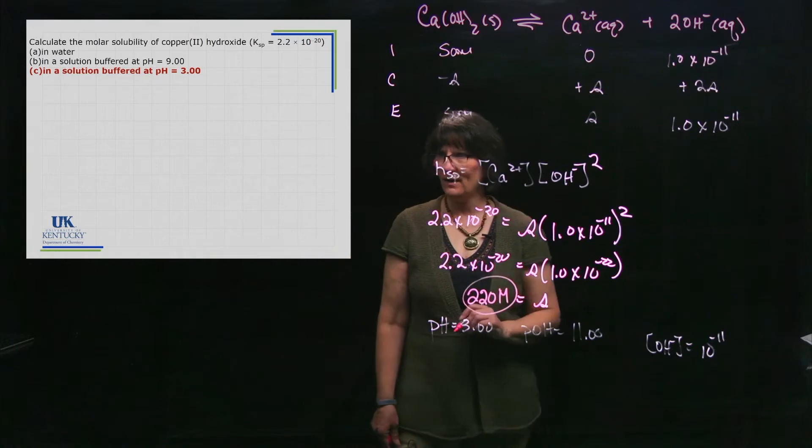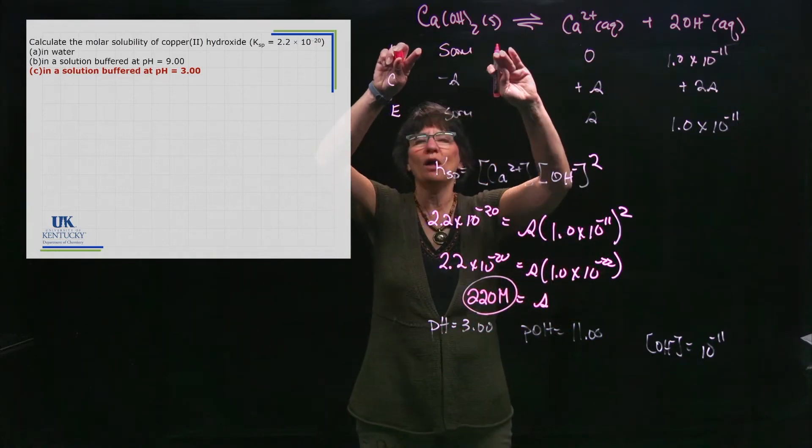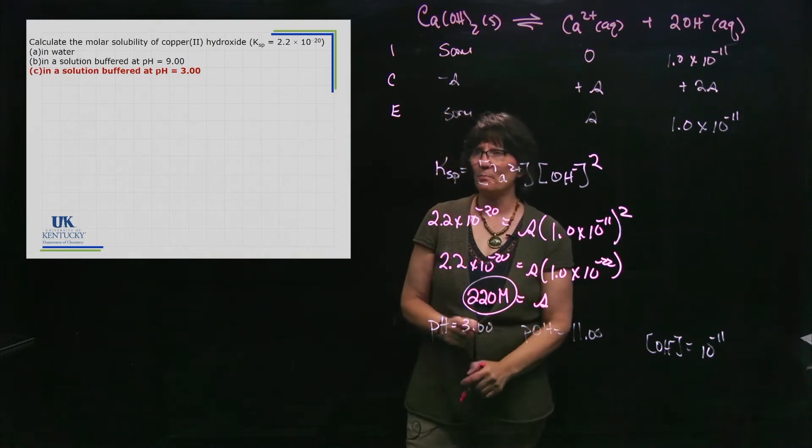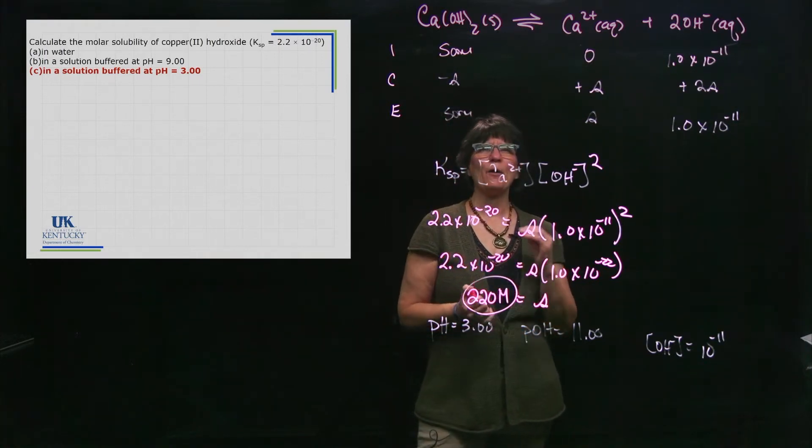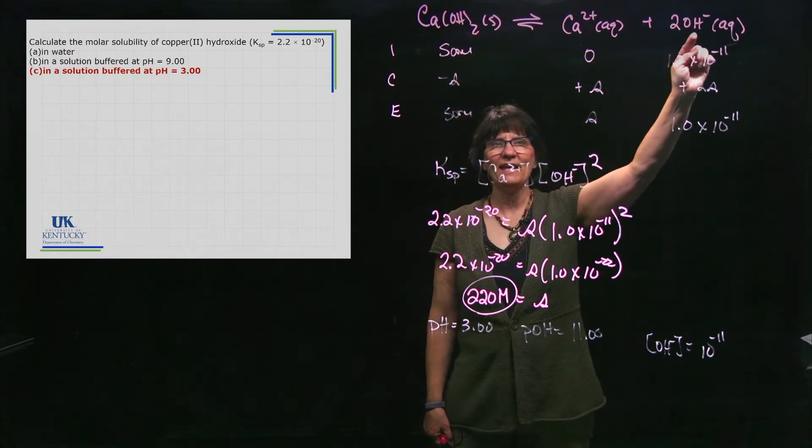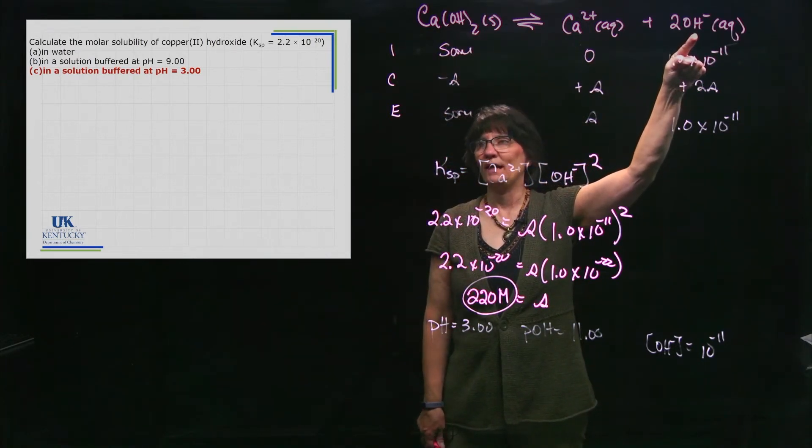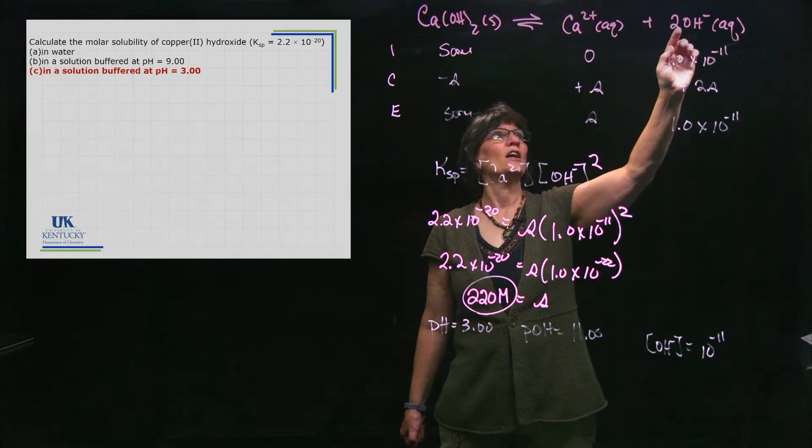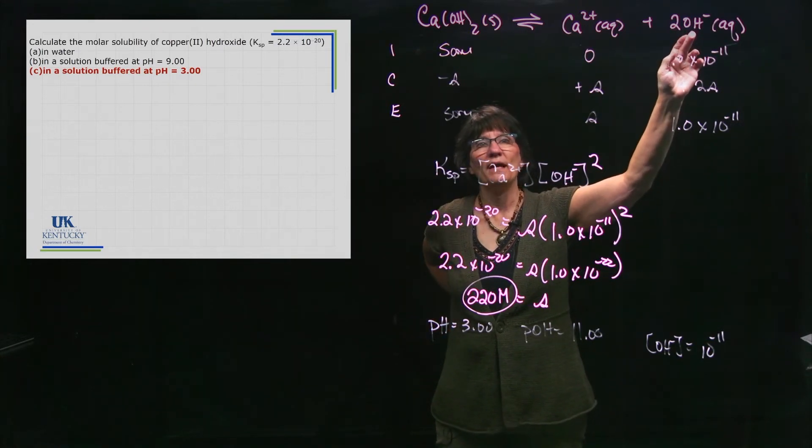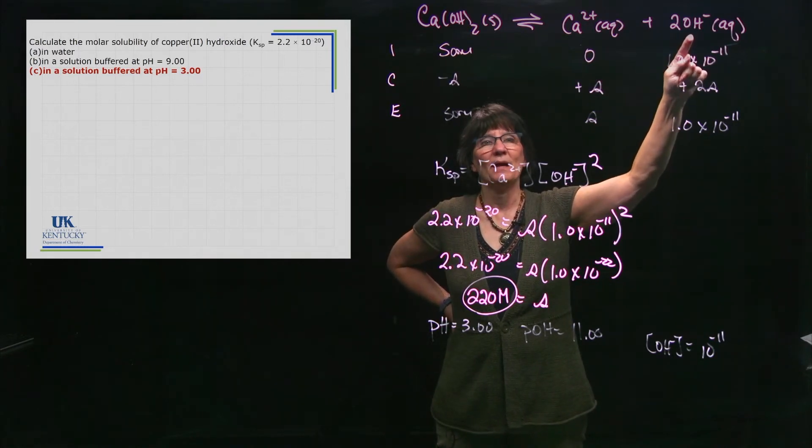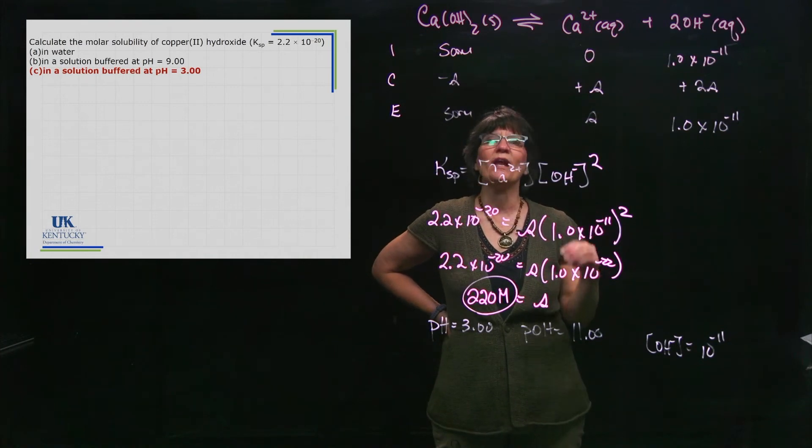Wow! You'd have to dump a whole lot in to get this much to dissolve. Think back to where we talked about how pH affects the solubility of a salt. If the anion is a basic anion—which is what we have here with the strong base hydroxide—then pH affects it. I told you that adding an acid will increase the solubility.